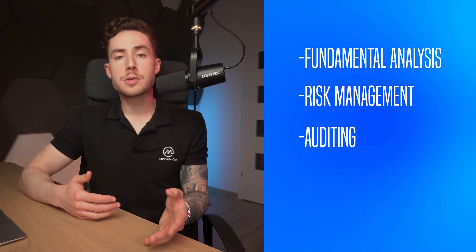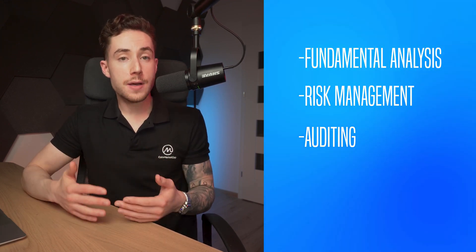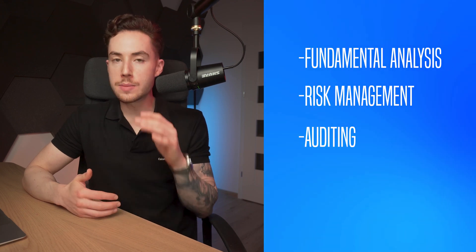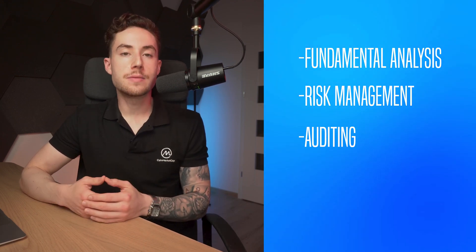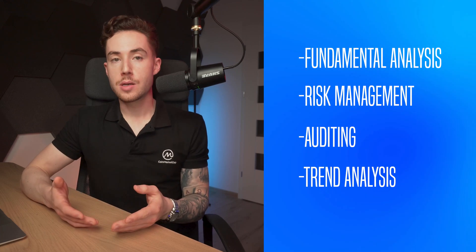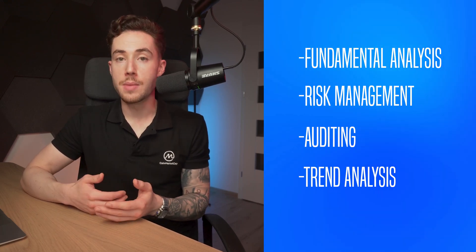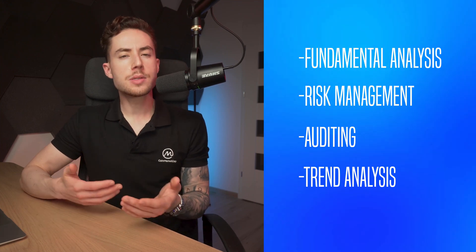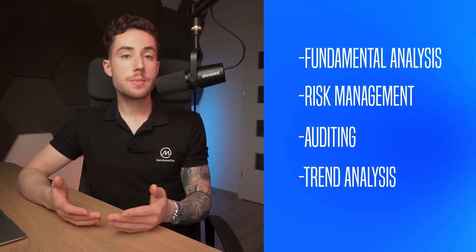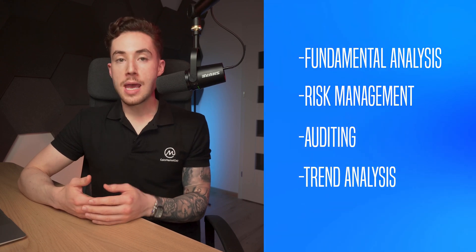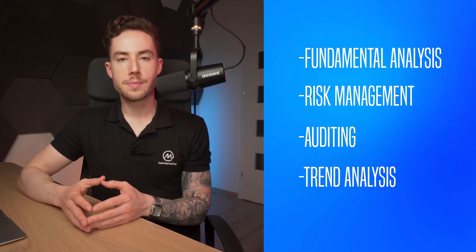Next is auditing. On-chain data ensures the verification of transaction records and that funds and contract actions are transparent and traceable, allowing for accurate and comprehensive audits. And then there's trend analysis — it can be possible to discern emerging patterns in blockchain activity over time. By observing these patterns, stakeholders can predict potential future behaviors, gauge the momentum of specific assets or platforms, and make informed decisions aligned with the evolving blockchain landscape.